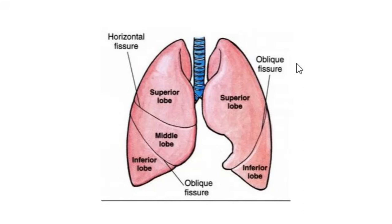Now for the names of the lobes. Starting with the right lung: we have the superior lobe, the middle lobe, and the inferior lobe — so the right lung has three lobes. The left lung has only two lobes: a superior lobe and an inferior lobe. The key differences are: two fissures on the right, one fissure on the left; three lobes on the right, two lobes on the left.